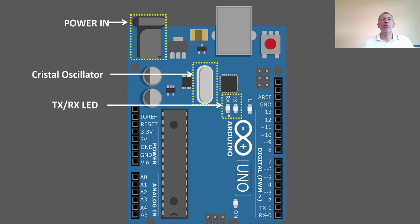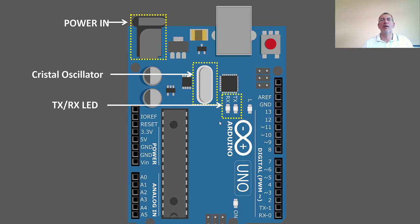These two here are basically two LEDs. When you're uploading software or code — Arduino uses the name 'sketch' for a program or code — once you upload the code, you'll see these two LEDs. They're indicator lights that show whether code is being transmitted or received, depending on which operation you're executing.